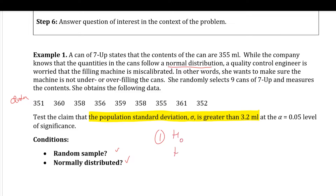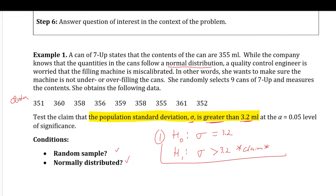Step one: null hypothesis versus alternative. This is a claim on a standard deviation. The null hypothesis has the condition of equality. Since the claim suggests the standard deviation is greater than 3.2, the alternative hypothesis is sigma > 3.2, and that is the claim statement. The null hypothesis has sigma = 3.2. These two numbers always match.